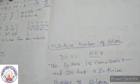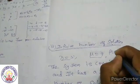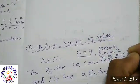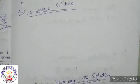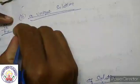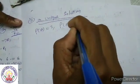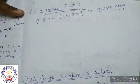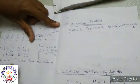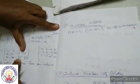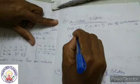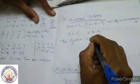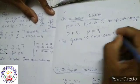Rank of A is equal to 2, rank of AB is equal to 2, but the number of unknowns is 3. For unique solution: rank A equals 3, rank AB equals 3, number of unknowns equals 3. Then the system is consistent and it has a unique solution.